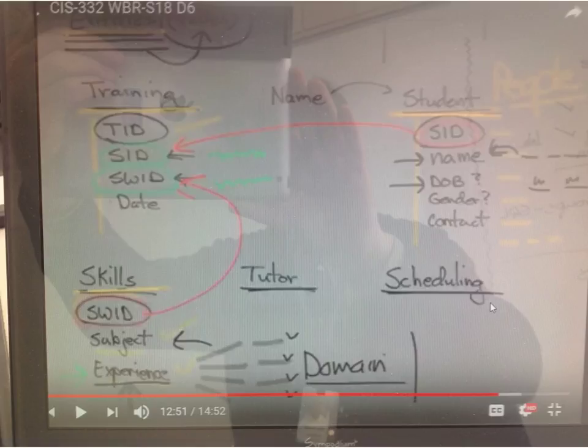So we talked a little bit about our design project. We have student entity, skills entity, and training. In the skills entity, we talked about experience. But in reality, that experience is going to have to probably go up here, and we will work on that some more. We can do that on Monday.